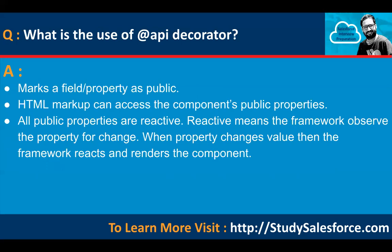What is the use of the @api decorator? It marks a field or property as public. HTML markup can access the component's public property. All public properties are reactive — reactive means the framework observes the property for changes. When a property changes value, the framework reacts and re-renders the component.